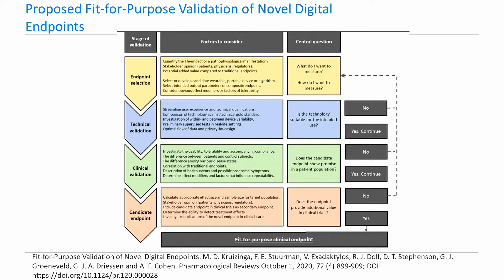The first section is the endpoint selection. The central question for this stage is to identify what you would like to measure and how you would measure it. The candidate endpoint should have a relationship with the studied disease or the general quality of life. Stakeholder opinion should be an important input at this stage. Input from patients and patient advocacy groups would be vital during the selection and validation process. There can be early engagement with regulators to identify appropriate regulatory interaction channels or discuss how clinically meaningful change can be defined.